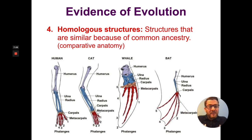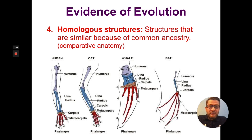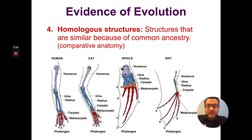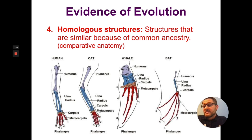Why would these fairly different organisms have the same kinds of bones if it wasn't for some common ancestor? It's kind of like saying everybody in my family has blue eyes — because we have ancestors, parents, grandparents, great-grandparents that also had blue eyes. So the reason you have blue eyes is because that was passed on from your relatives. Homologous structures suggest that these more complicated structures were passed on by more distant relatives.